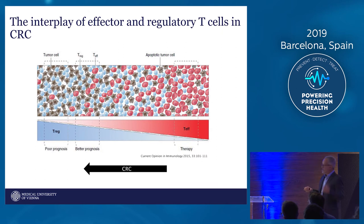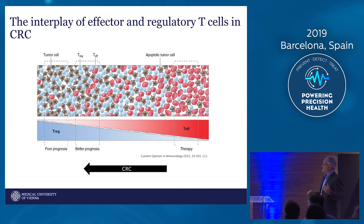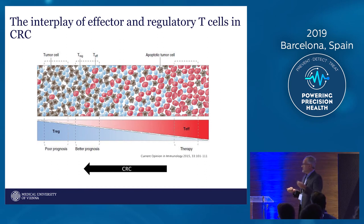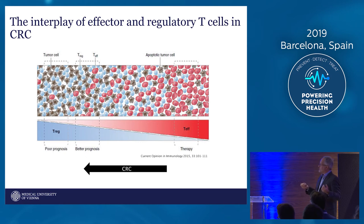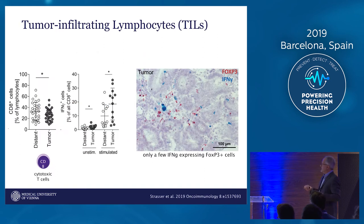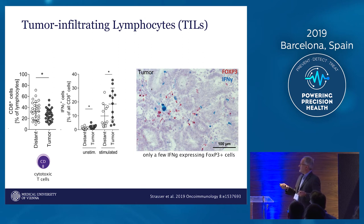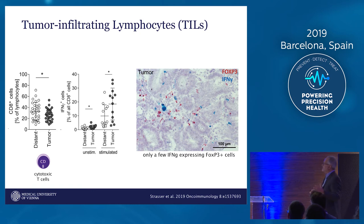We then went further to look whether this increase of regulatory T cells leads to a decreased production of interferon gamma by the cytotoxic T cells. We isolated lymphocytes from the tumor and from normal tissue of patients, cultured and activated these cells, and found, surprisingly, that CD8-positive T cells in the tumor are more aggressive than those in the normal tissue. This could also be confirmed in tissue stained for mRNA for FOXP3 — for the regulatory T cells — and interferon gamma. So it's not just an artificial system in culture, but also in the tissue itself we have T-regs and interferon-gamma-producing CD8-positive lymphocytes in the same tissue. This was surprising and not as expected.